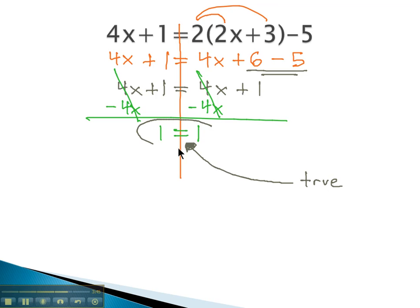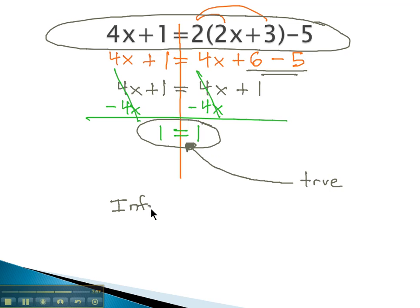Because 1 equals 1 always, this is always true. It also suggests that the original equation is also always true. Because it's always true, we will say there are infinite solutions.